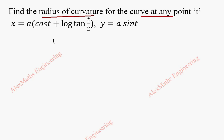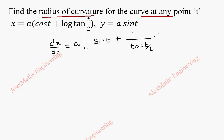As a first step, we have to find dx/dt. Its differentiation is: a is a constant, we keep separately. cos t gives minus sin t, plus log(tan(t/2)) gives 1/tan(t/2), and the tan differentiation is secant square, so secant square(t/2). And t/2 differentiation by chain rule is 1/2.